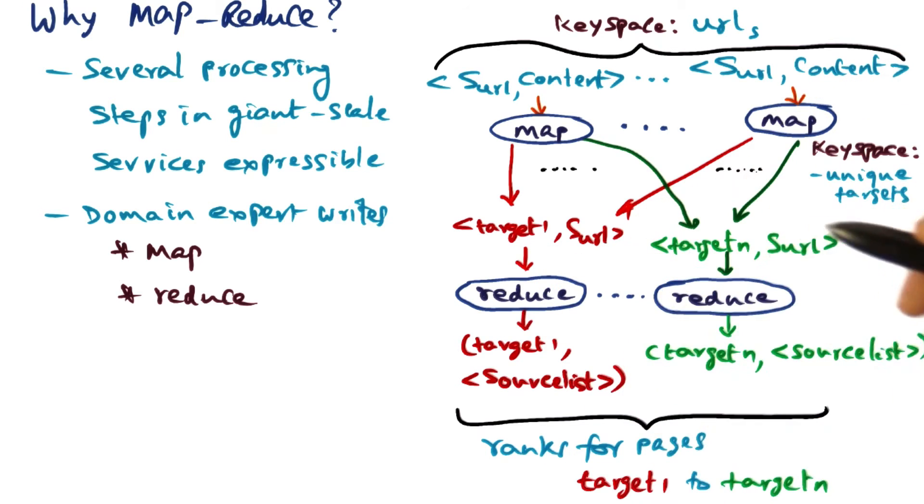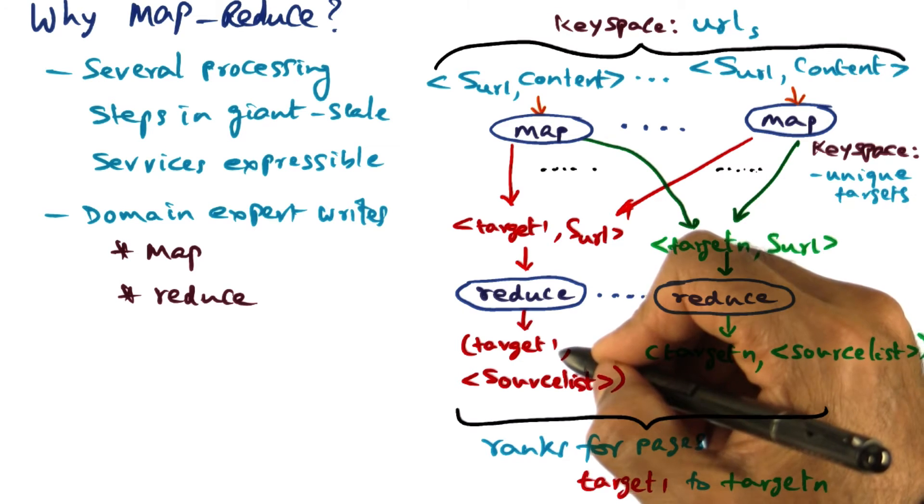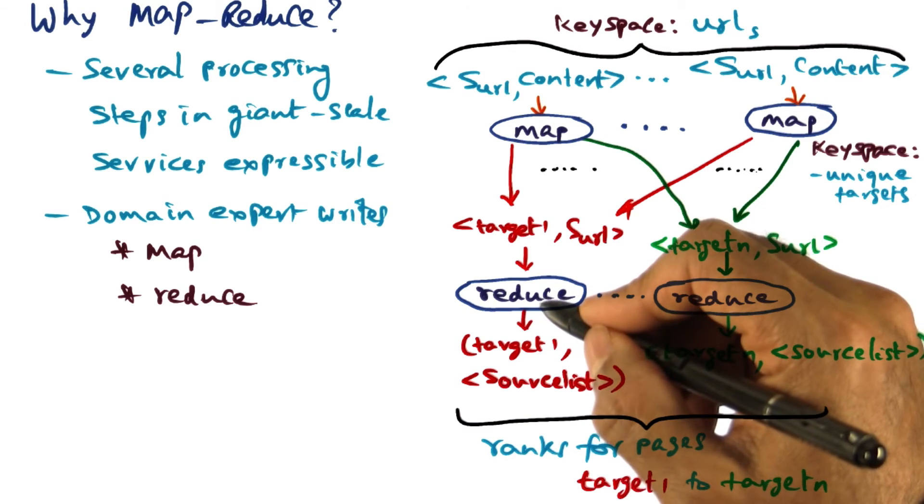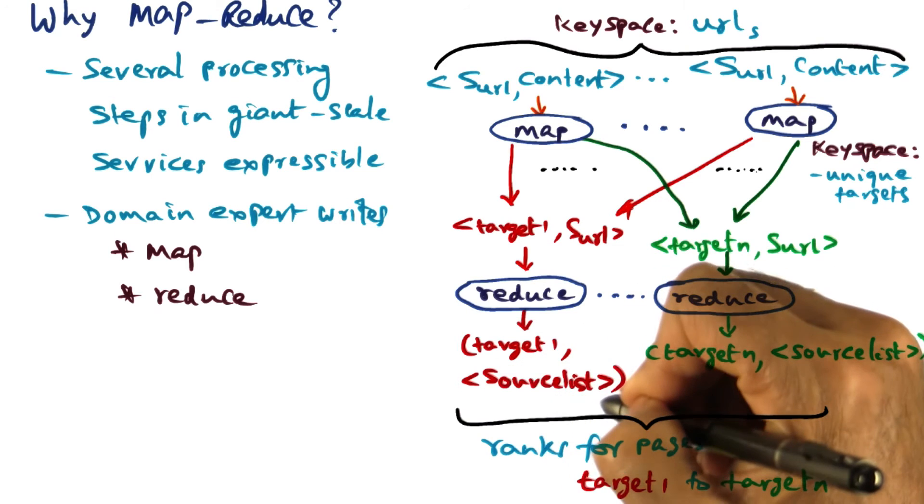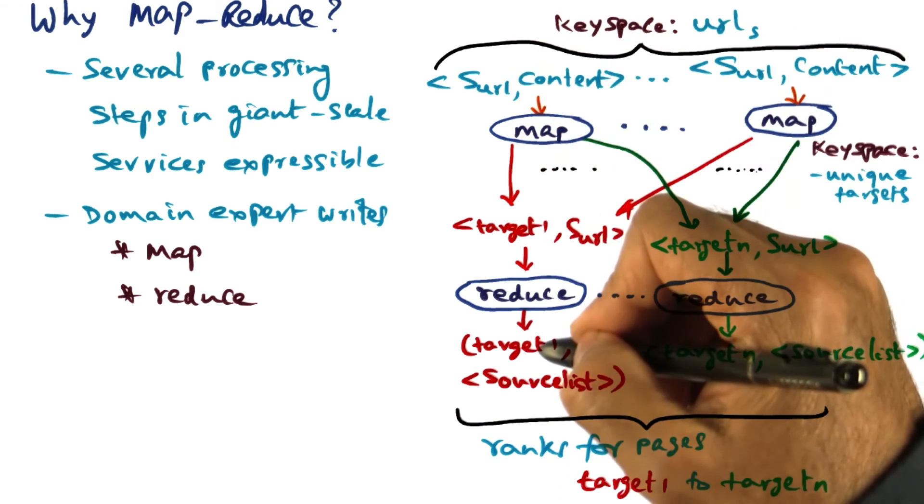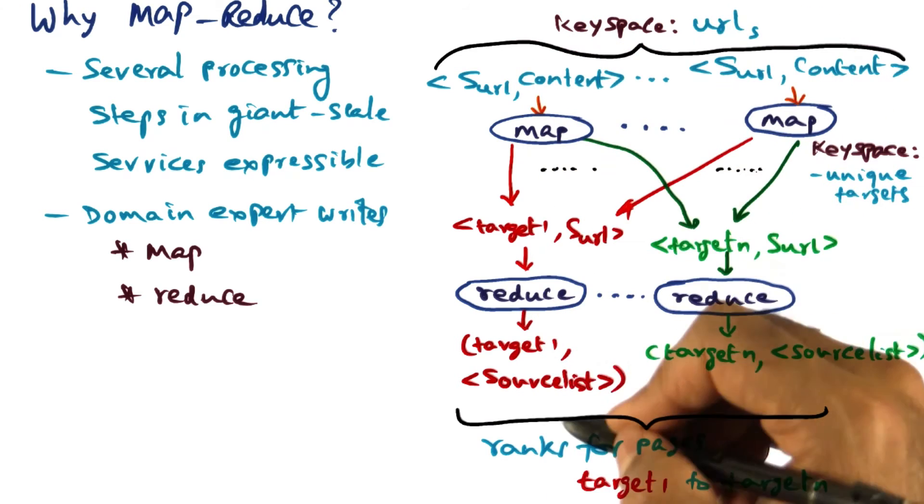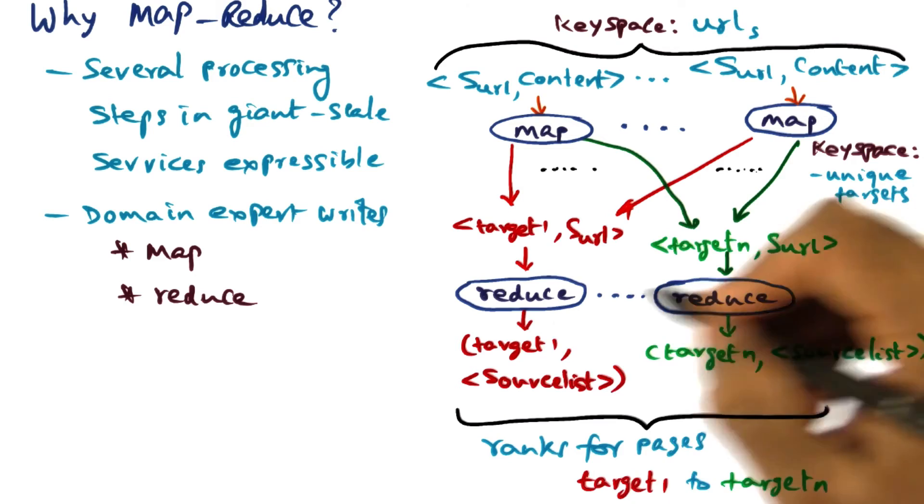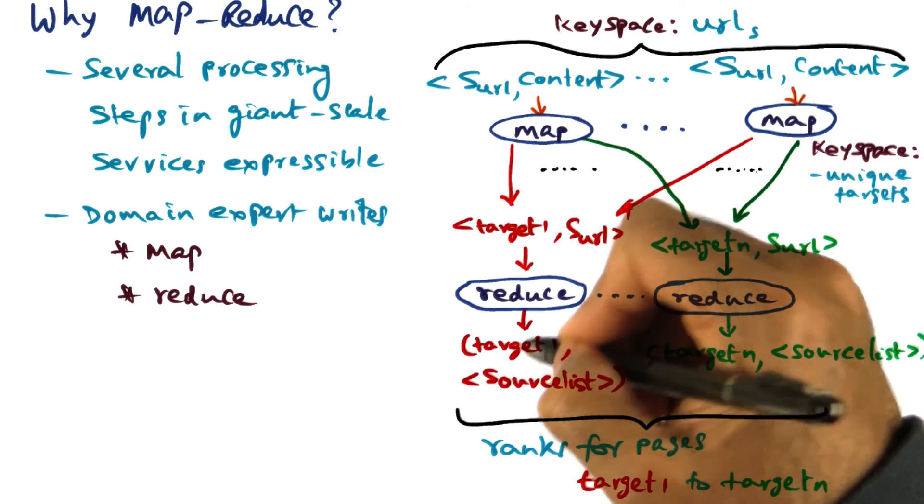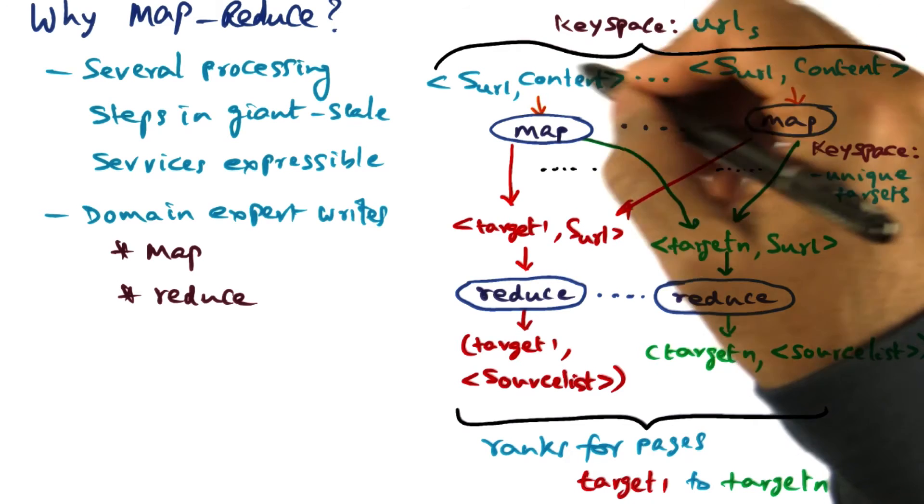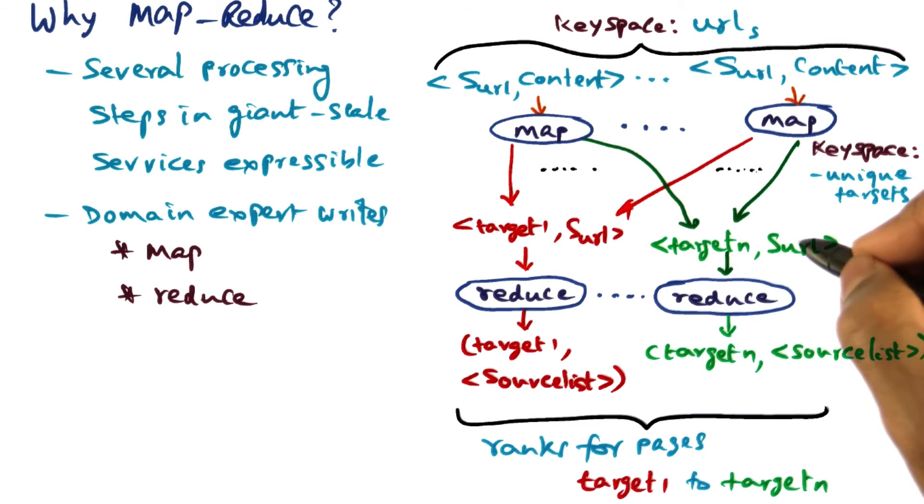So the output of the reducer is going to be the specific target that this guy has been asked to accumulate and a source list, meaning all the source pages in which this particular target was found. So each of these reducers is going to find the number of times a particular URL is found in the input corpus of web pages that came into the system as a whole.